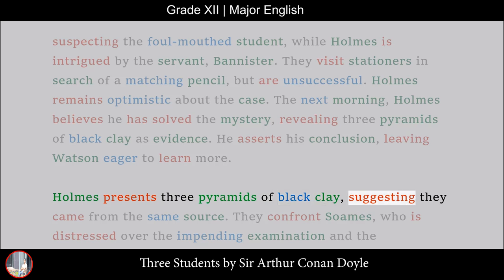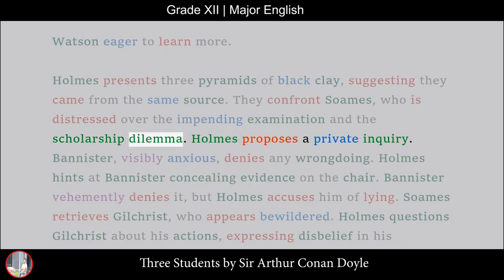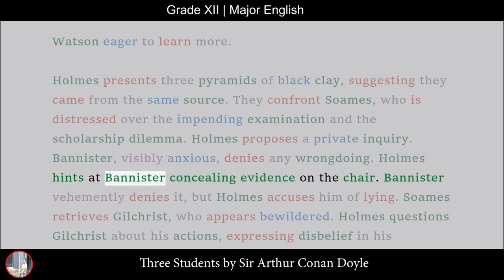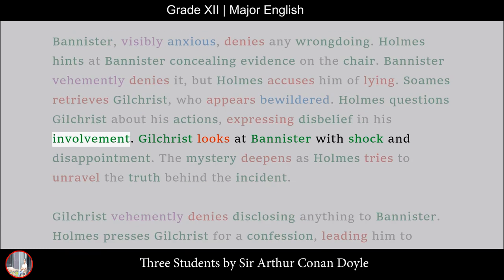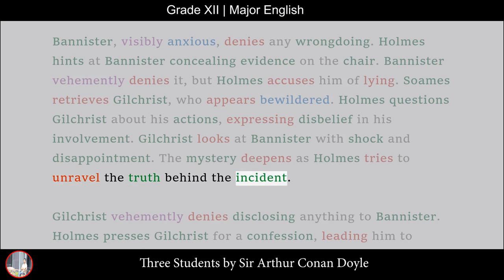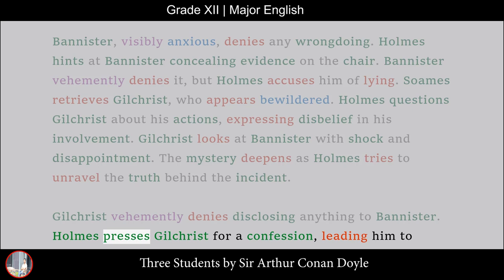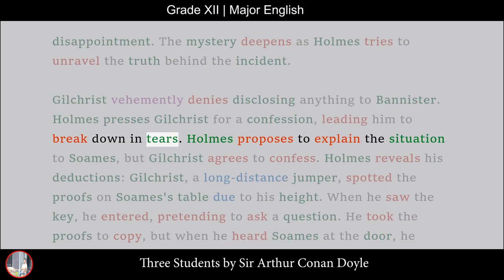Holmes presents three pyramids of black clay, suggesting they came from the same source. They confront Soames, who is distressed over the impending examination and the scholarship dilemma. Holmes proposes a private inquiry. Bannister, visibly anxious, denies any wrongdoing. Holmes hints at Bannister concealing evidence on the chair. Bannister vehemently denies it, but Holmes accuses him of lying. Soames retrieves Gilchrist, who appears bewildered. Holmes questions Gilchrist about his actions. Gilchrist looks at Bannister with shock and disappointment. Holmes presses Gilchrist for a confession, leading him to break down in tears. Gilchrist agrees to confess.